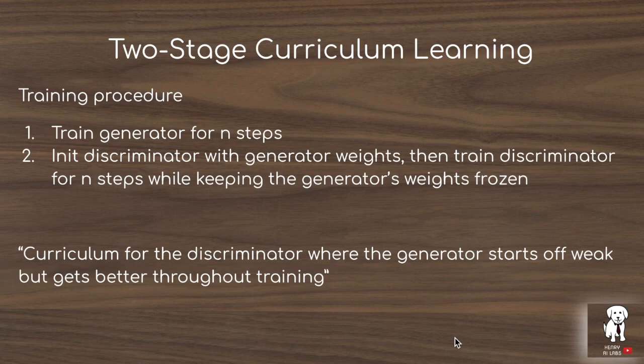They initialize the discriminator with generator weights trained for N steps on masked language modeling, then keep the generator weights frozen while training the discriminator. Even with tied weights or separate weights, both models continue improving at their respective tasks as the generator and discriminator are trained in the replace token detection framework.